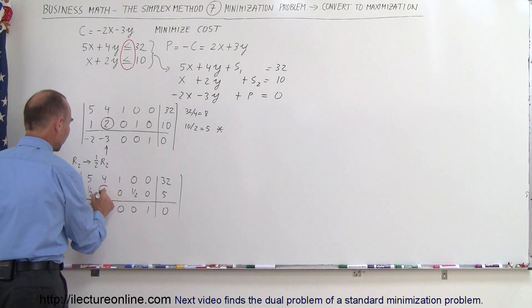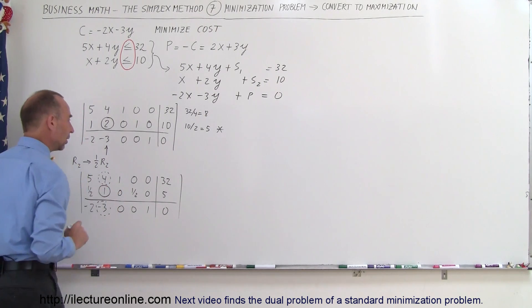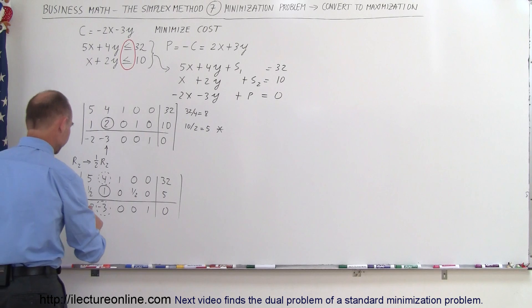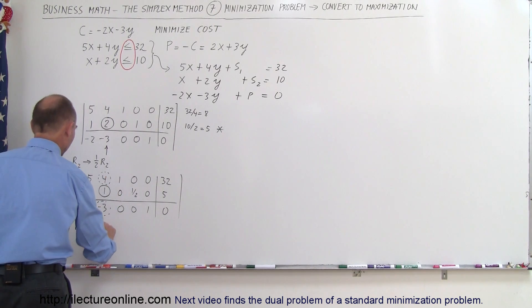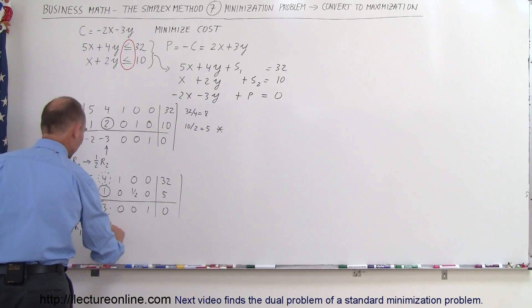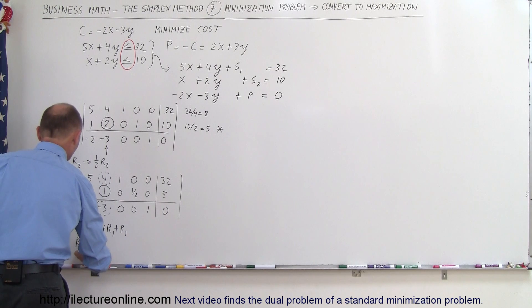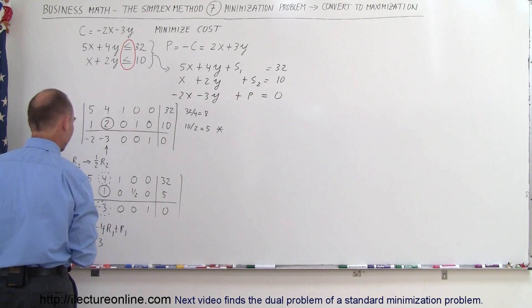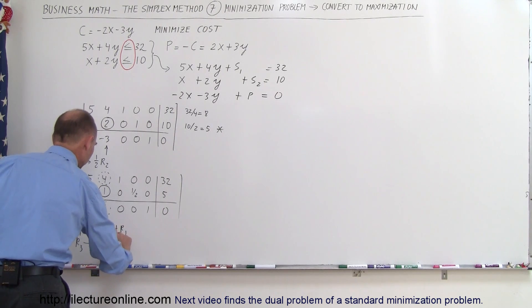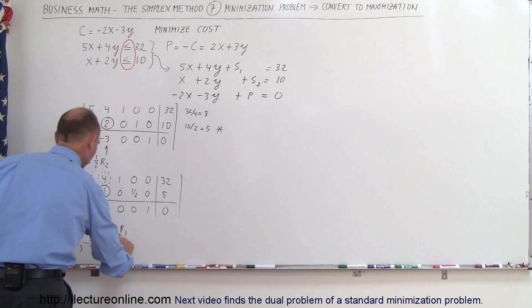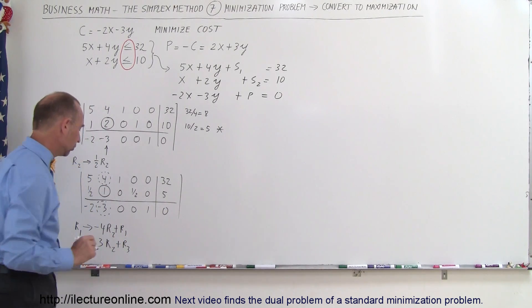We're going to pivot around this number to get rid of the 4 and the negative 3. To do that, we take R1 and replace it by minus 4 times R2 added to R1. We take R3 and replace it by positive 3 times R2 added to R3. Be careful — it's the row with the 1 in it, which is the second row R2.